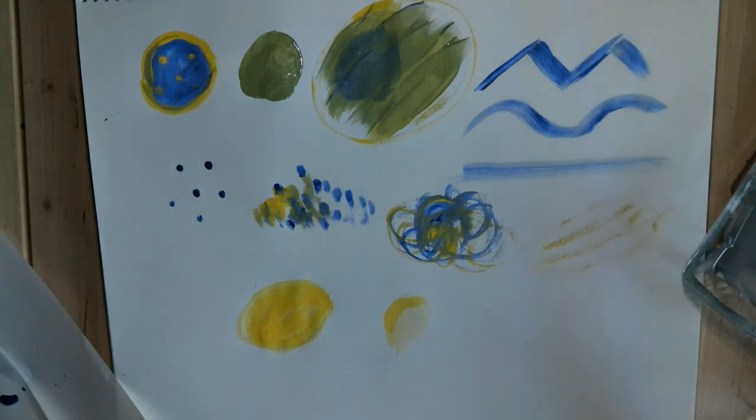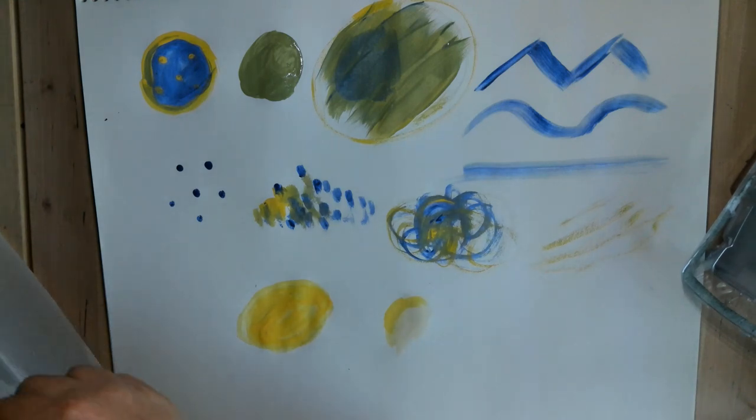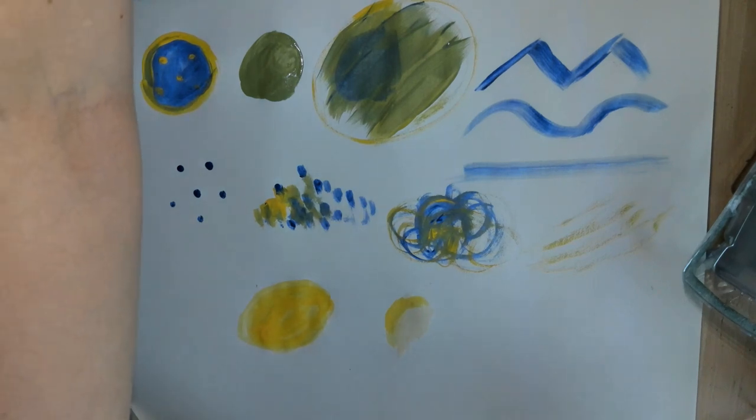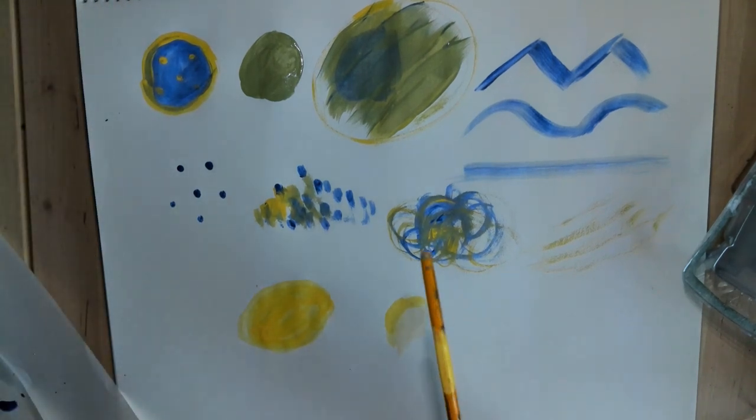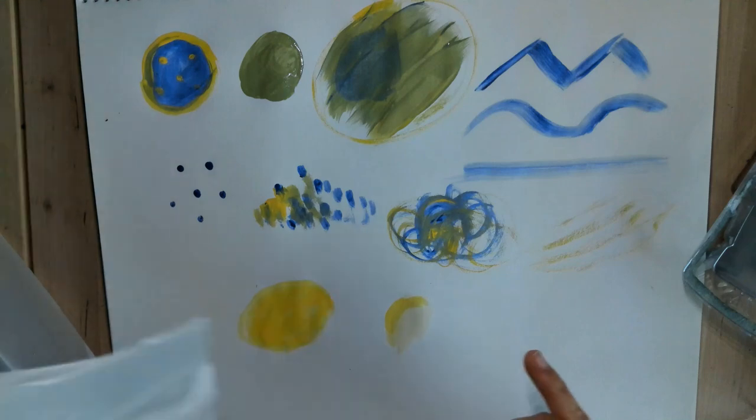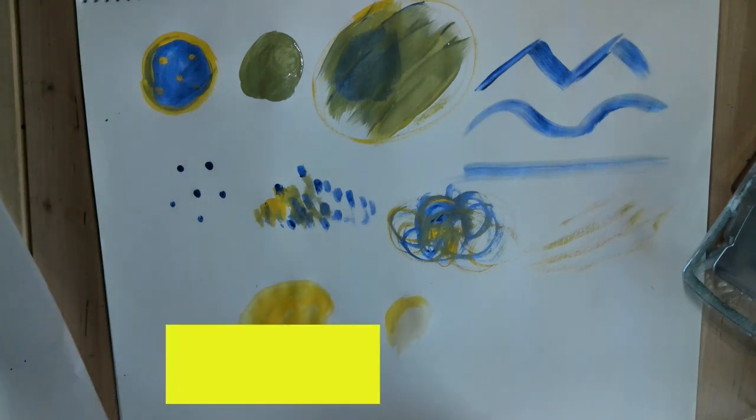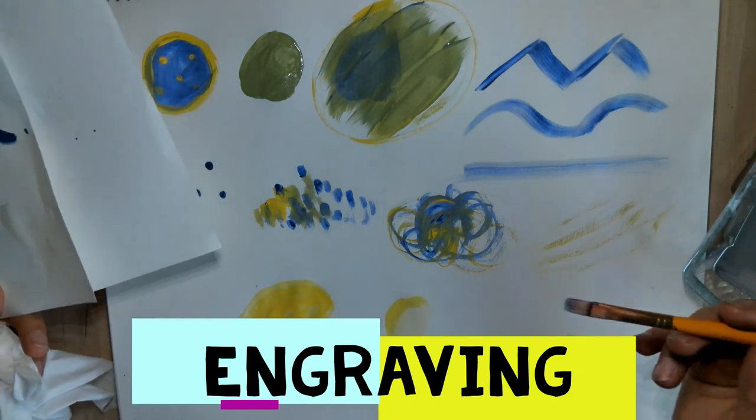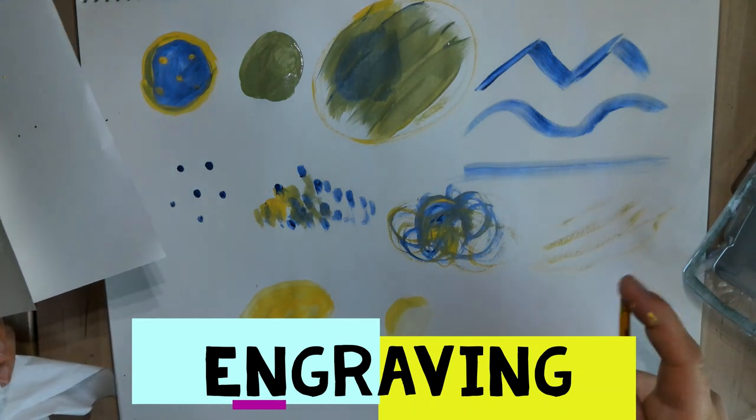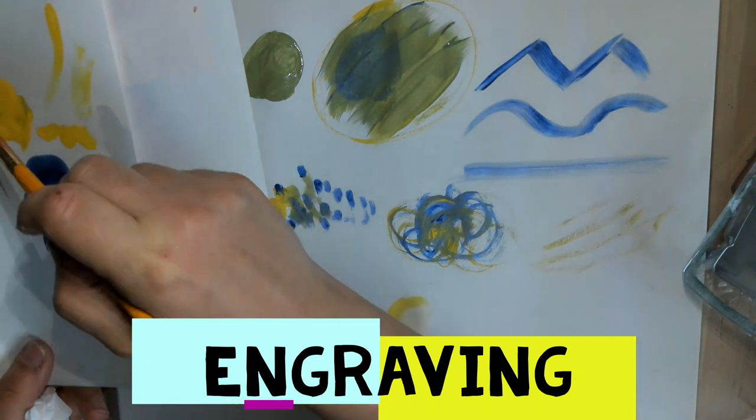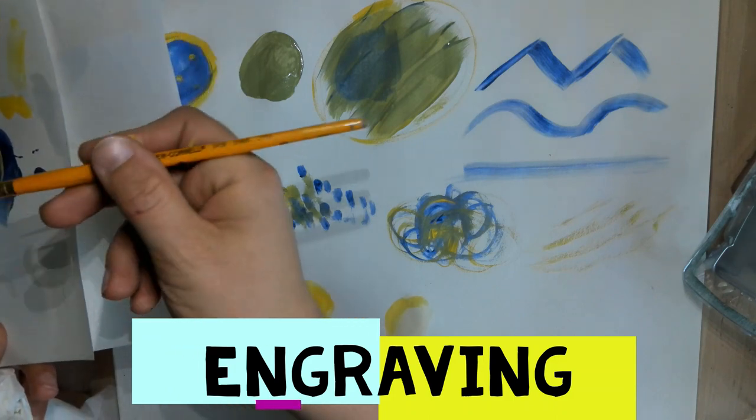And then the last two techniques I want to show you are a little bit more advanced than what we usually use in the art room. I've got some paint on my brush so I want to clean it off with a tissue. One of them is called engraving, and that is when you use the back of your paintbrush as well as the front.